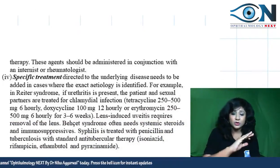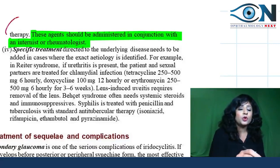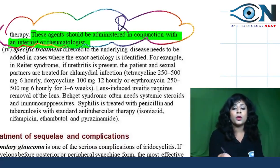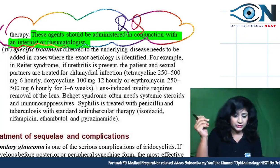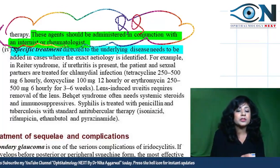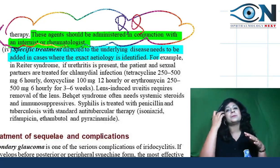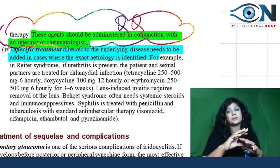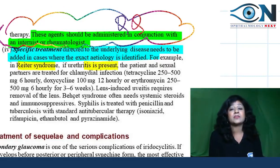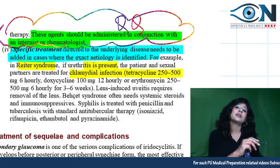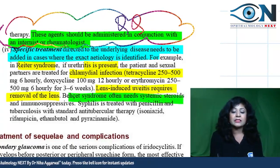Immunosuppressive drugs should always be administered in conjunction with an internist or rheumatologist — never start these drugs on your own. Specific treatment must also address the underlying cause. For Reiter's syndrome with urethritis, both the patient and partner should be treated for chlamydial infection. Lens-induced uveitis requires lens removal.